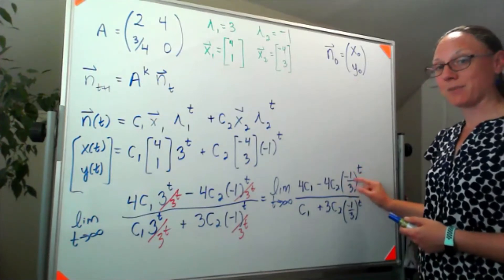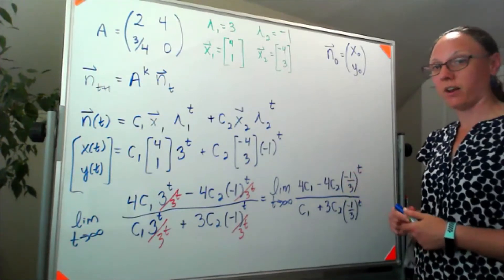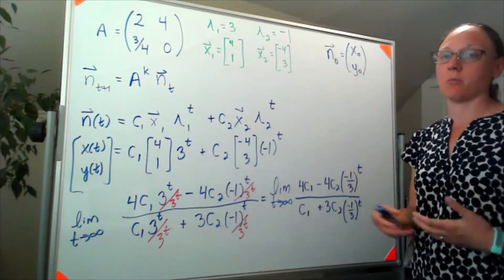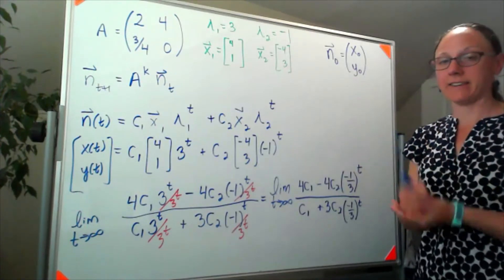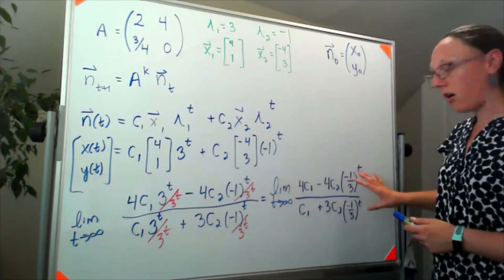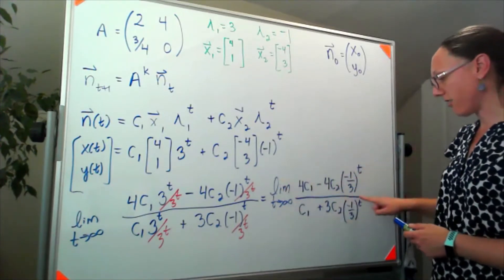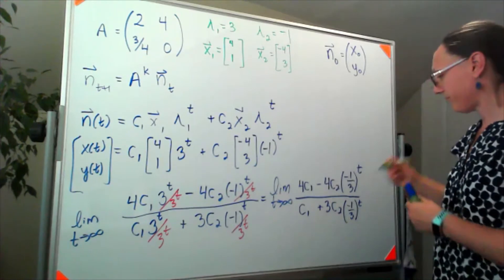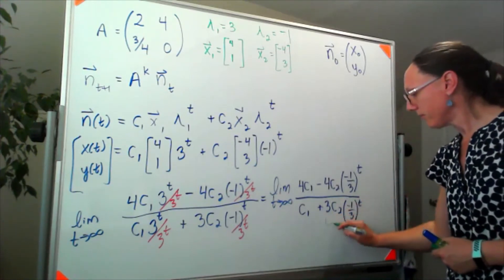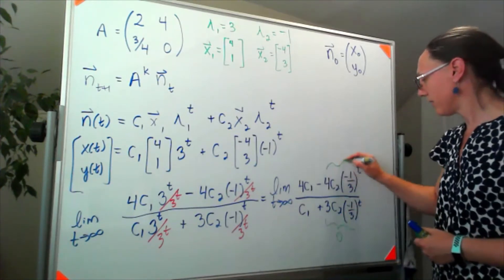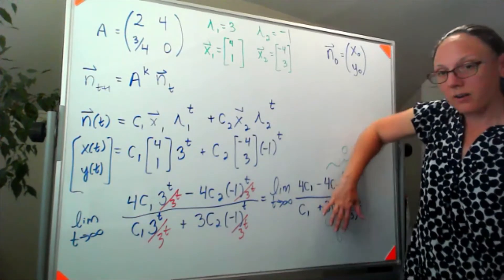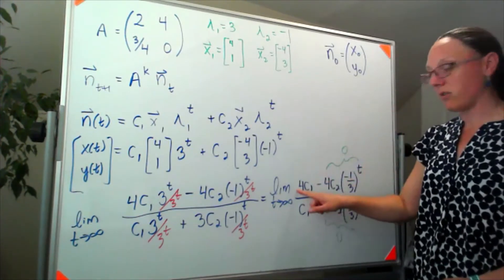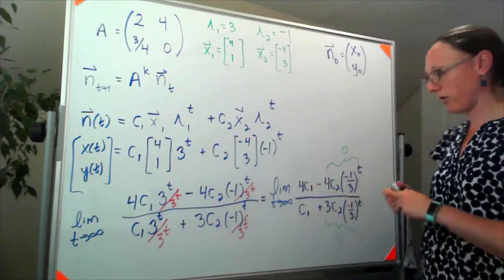This r, absolute value of it is less than one, meaning if I multiply one third times one third times one third, those numbers are getting smaller and headed to zero. So overall this piece is headed to zero, and so is this piece. And once those are gone, my c1s will cancel out and I'm just going to get a four over one.